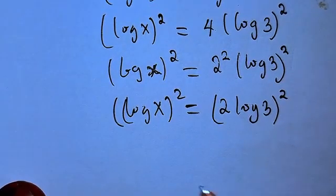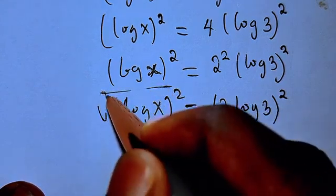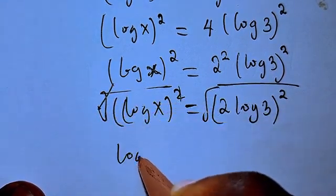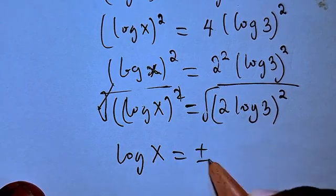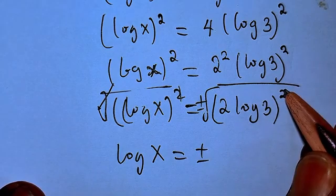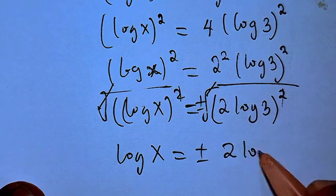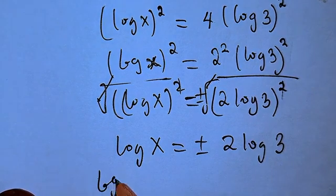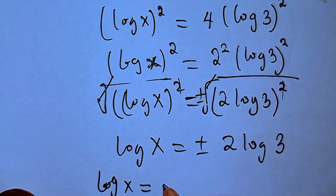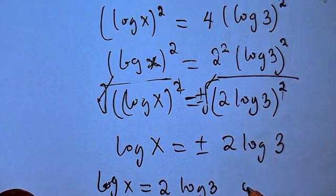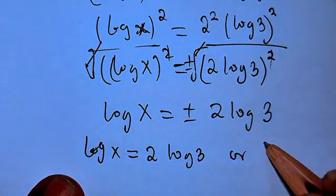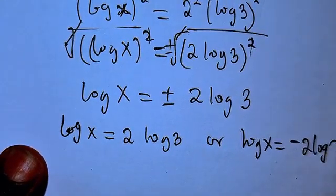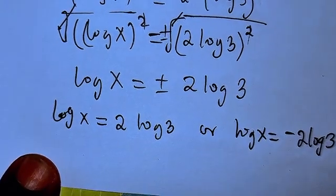We can now take the square root of both sides. Taking the square root cancels the squares, giving us log x equals plus or minus 2 log 3. So we have two cases: log x equals 2 log 3, or log x equals minus 2 log 3.